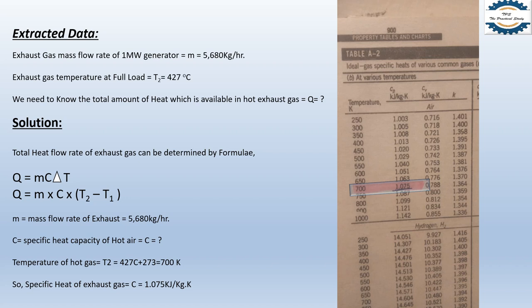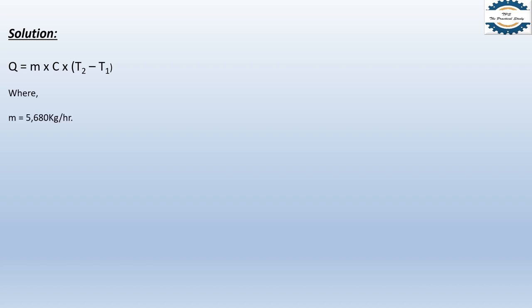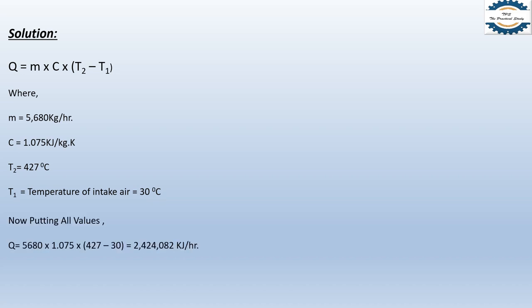We have mass flow rate m = 5680 kg per hour, specific heat capacity c = 1.075 kJ/kg·K from the thermodynamic chart, T2 = 427 degrees centigrade from the data sheet, and T1 = 30 degrees centigrade as the intake air temperature. You can substitute your own ambient temperature if it differs from 30 degrees centigrade. For this average calculation I am taking 30 degrees centigrade.